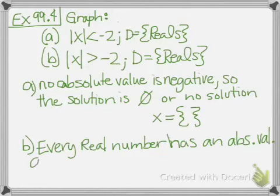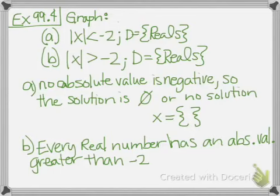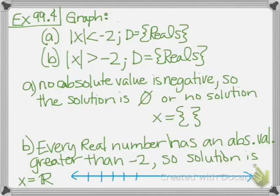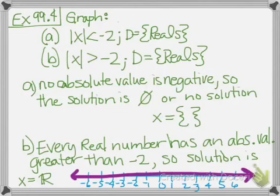The second part: we want all values where the absolute value of x is greater than negative 2. Every real number has an absolute value greater than negative 2, so the solution set is all real numbers. Any number you plug in for x will work, because every absolute value is positive and every positive number is greater than negative 2. On a number line, you get every single possible solution.